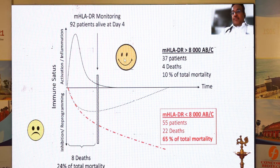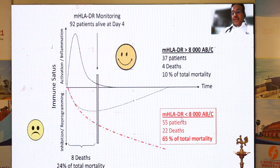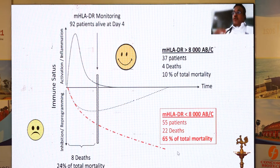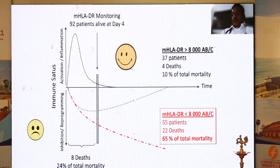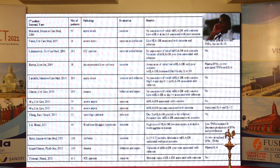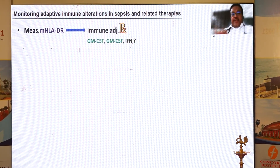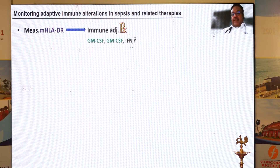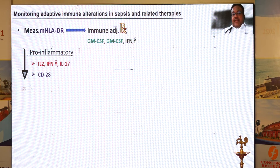In one study, in patients with good HLA-DR expression of more than 8,000 in 37 patients, the mortality was 10%. But where the HLA-DR expression was less than 8,000 in 55 patients, the mortality was 65%. This means if you have higher HLA-DR expression, it is very protective; lower HLA-DR expression carries a higher risk of patient mortality. These studies have looked at the correlation of HLA-DR expression and outcome. So now they are looking at monitoring adaptive immune concentration responses, and measuring HLA-DR is found helpful in identifying immune-attentive therapies including the role of GM-CSF and GCSF.